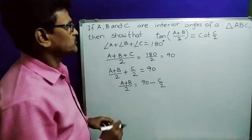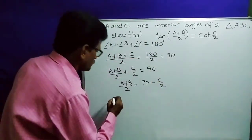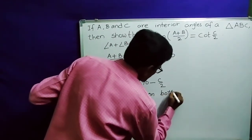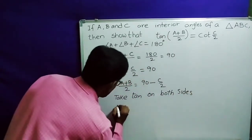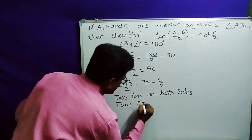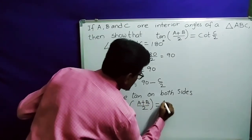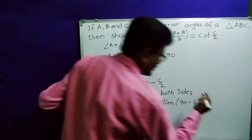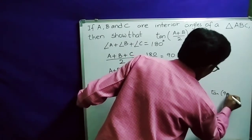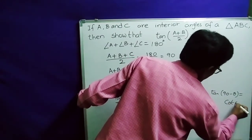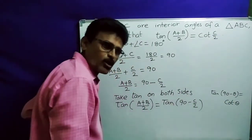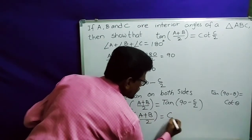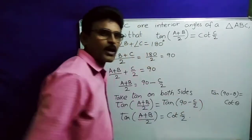Sending C by 2 to the right side: (A plus B) by 2 equals 90 minus C by 2. Now take tan on both sides: tan of (A plus B) by 2 equals tan(90 minus C by 2). We know tan(90 minus theta) equals cot theta, so this becomes cot C by 2. Therefore tan of (A plus B) by 2 equals cot C by 2, which is what we had to prove.